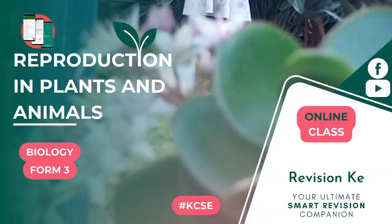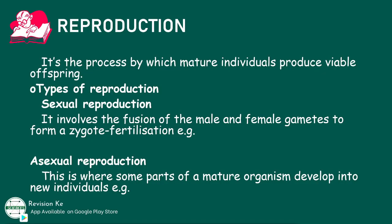Reproduction is a process by which mature individuals produce viable offsprings. These are some of the types of reproduction. We have sexual reproduction, which involves the fusion of the male and female gametes to form a zygote. And we have asexual reproduction, where parts of a mature organism develop into new individuals.